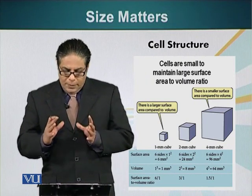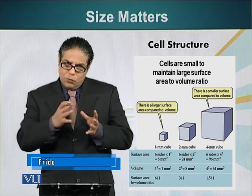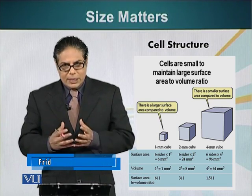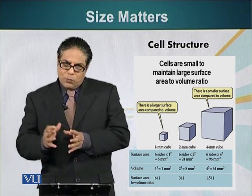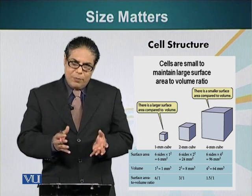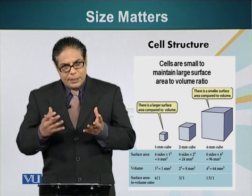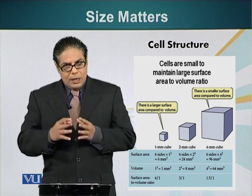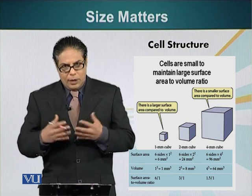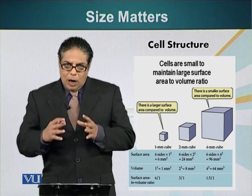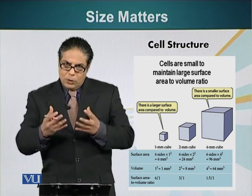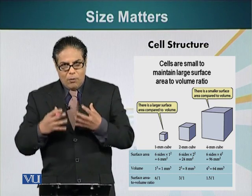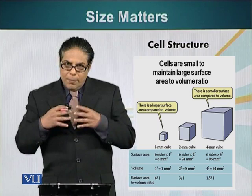Cells are small because they have to maintain a specific surface area to volume ratio. As the volume increases, so does the demand for raw materials and also the requirement to release waste products produced by the cell during metabolism. For example, cells need glucose as a source of energy. They burn glucose in an oxidation reaction — just like fuel burns in our houses or in our cars — producing carbon dioxide. Carbon dioxide has to be exported out, whereas glucose and oxygen have to be brought in.